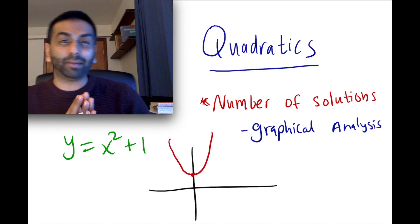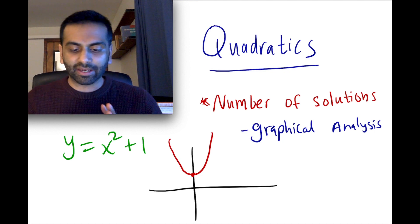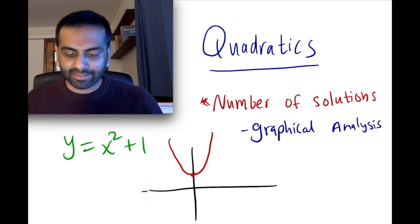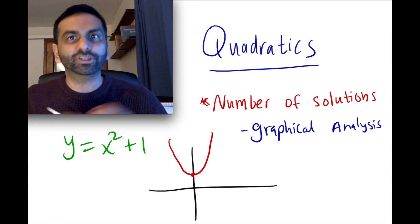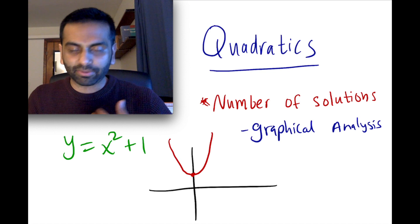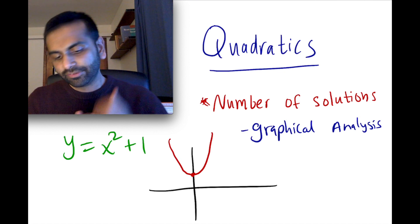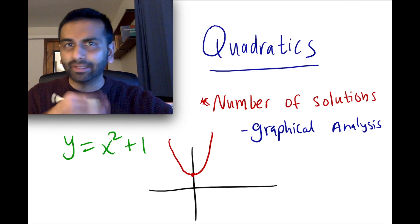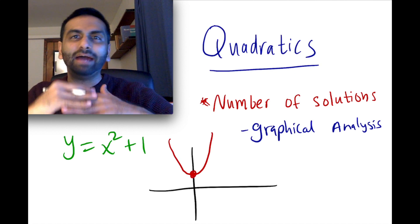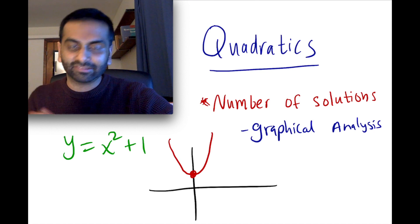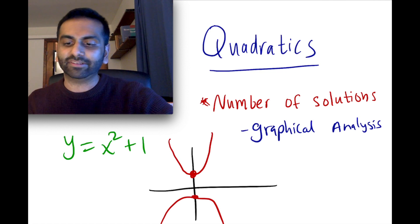Now this is what this parabola looks like. Graphically, we can tell that there are no solutions because nowhere does this parabola hit the actual x-axis — there's no intersection. That's ultimately what a solution is: the x-intercept. If that parabola never hits the x-axis, there won't be any solutions, there won't be any x-intercepts. If your parabola just doesn't touch it — if it's an upward-opening parabola whose vertex is at a positive y-value — then it's not going to touch the x-axis. Similarly, if it's a downward parabola whose vertex is below the x-axis, that's also not going to have any solutions.